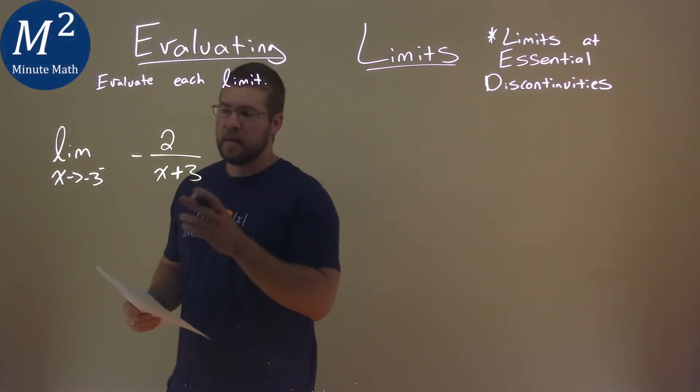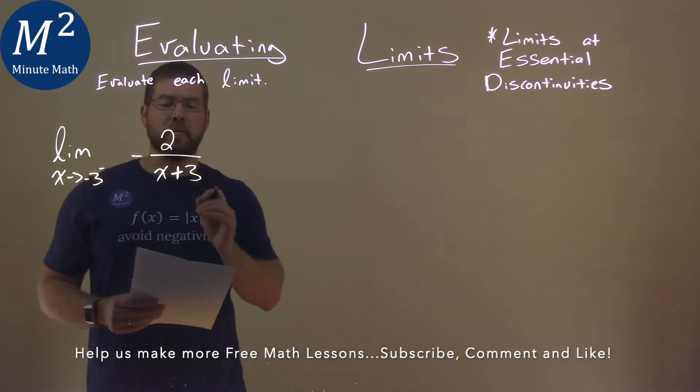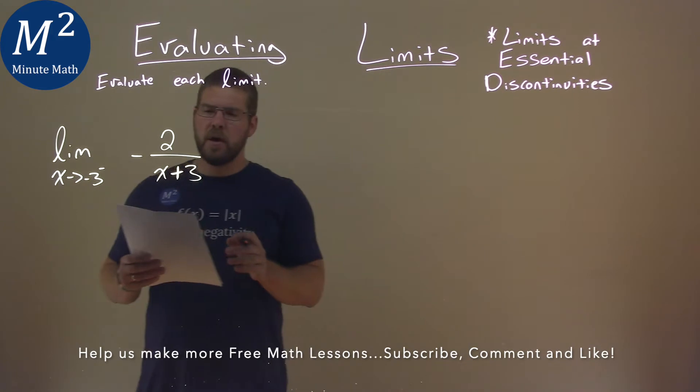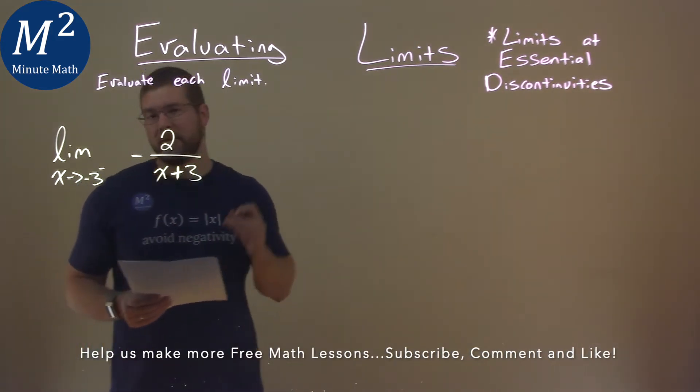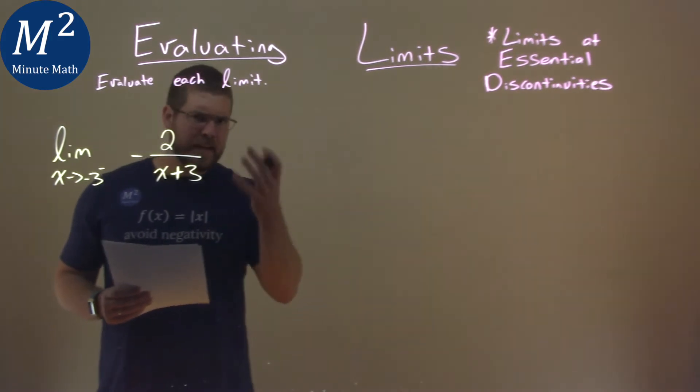We're given this limit right here, the limit as x approaches negative 3 from the left of negative 2 over x plus 3, and we have to evaluate this limit. So we know at negative 3, we plug that right in for x, and we're dividing by 0. Can't do that.